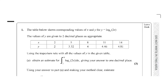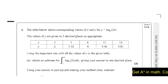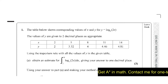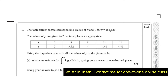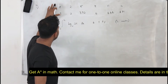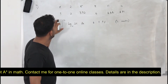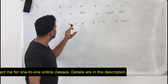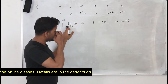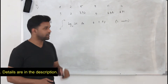Look at question number one. We are given a table and y is a function log₂(2x). Use the trapezium rule to obtain an estimate for the integral from 2 to 14 of log₂(2x) dx, and give your answer to one decimal place. This question has three marks. We are given a table and we need to find the value of this integrand, the logarithmic function log₂(2x) dx.